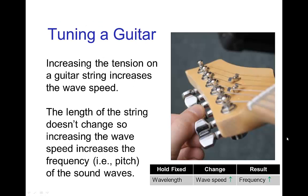So let's look at some examples of this. So if you are tuning a guitar, you increase or decrease the tension. If you increase the tension on the guitar string, that increases the wave speed on that string. And since the length of the string doesn't change to any significant degree, holding the wavelength fixed while increasing the wave speed increases the frequency. So you'll get a higher pitch as you increase the tension on the string.